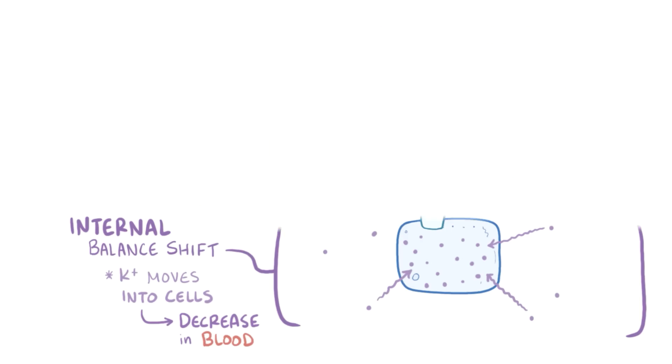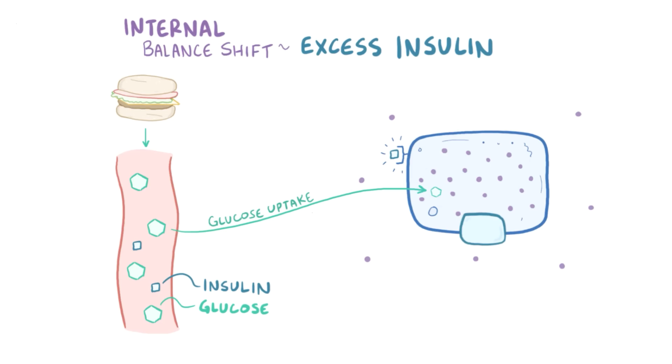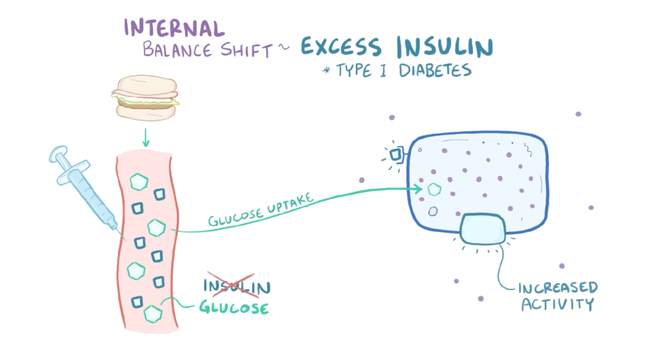One potential cause of an internal potassium balance shift is having excess insulin. This is because after a meal, glucose increases in the blood, and at the same time insulin is released, which binds the cells and stimulates the uptake of that glucose. Insulin also increases the activity of the sodium-potassium pump, which pulls potassium into cells. People with type 1 diabetes don't make enough insulin, and so they use exogenous insulin, meaning an injection or infusion of insulin. In rare cases, insulin overdose can cause enough potassium uptake into cells as to cause hypokalemia.